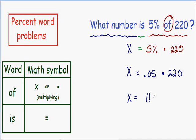If you're not allowed to use the calculator, I do have a video on multiplying decimals by hand. And now we have solved this word problem. What number is 5% of 220? 11 is 5% of 220.